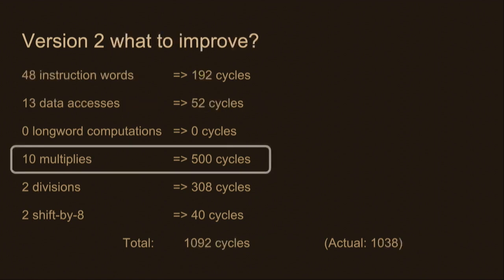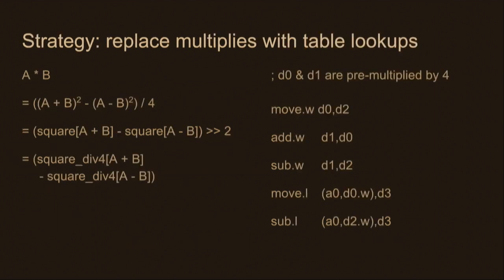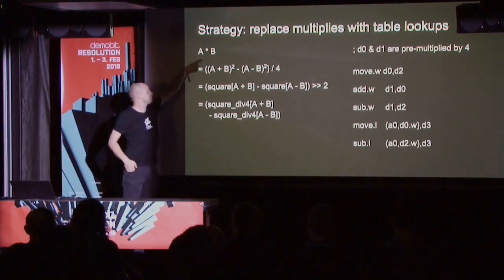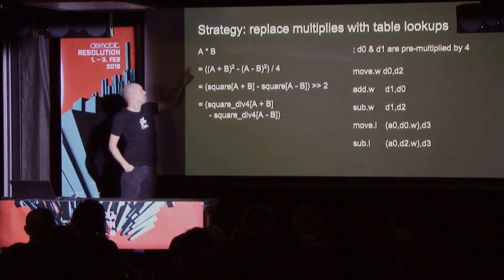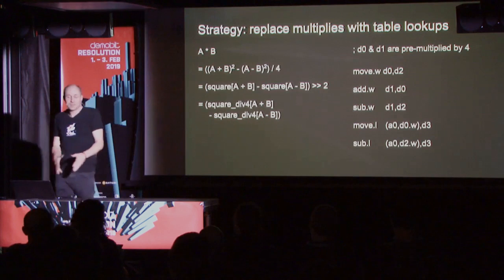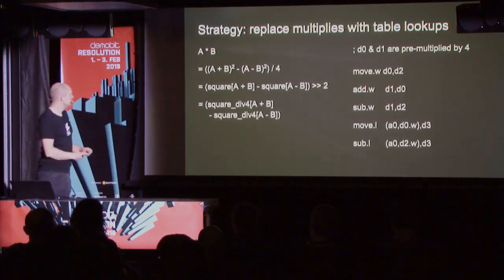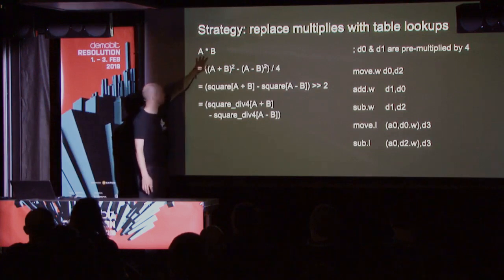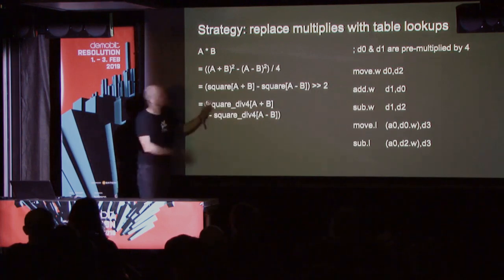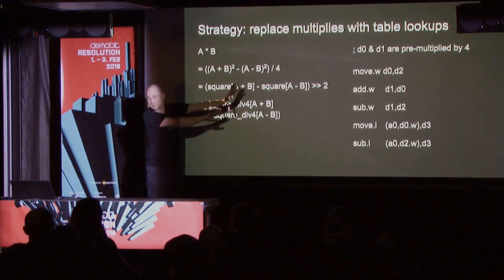What about those multiplies? The problem there isn't memory access — it's that it's heavy CPU work. This is when we bring out the maths book. You can rewrite a simple multiplication as two additions and then two squares. The nice thing with squares is you can compute them through a table lookup. So effectively, we're trading one multiply for addition, subtraction, and two table lookups.